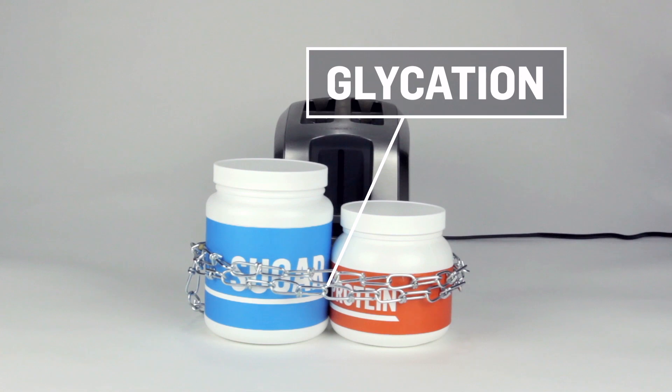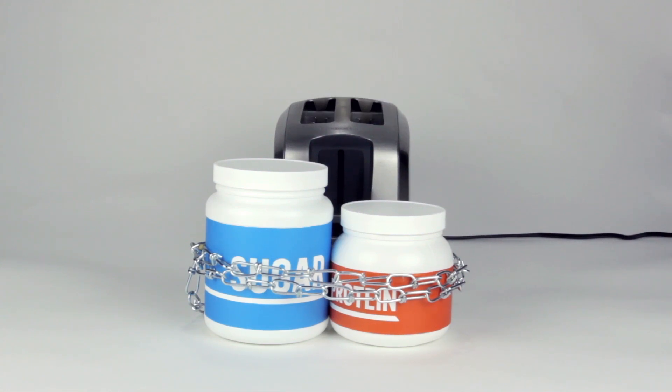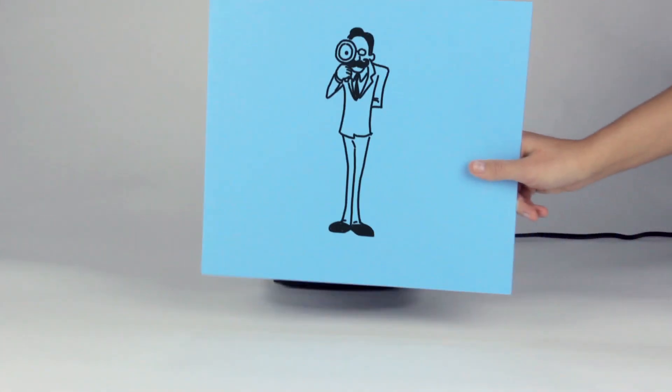High levels of sugar in the body lead to an unhealthy accumulation of AGEs. But inside our bodies isn't the only place AGEs can form.